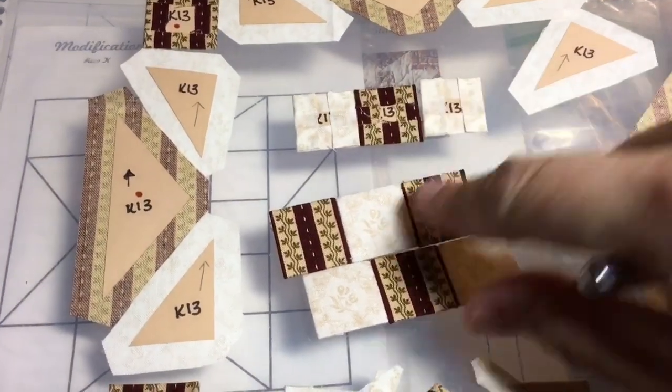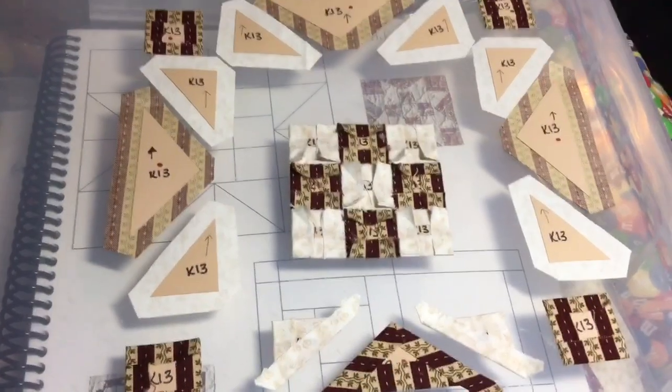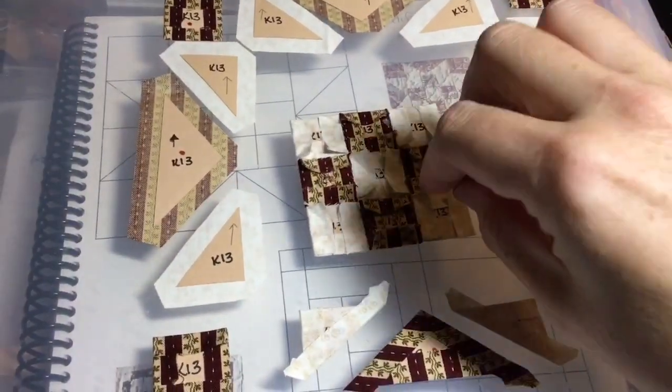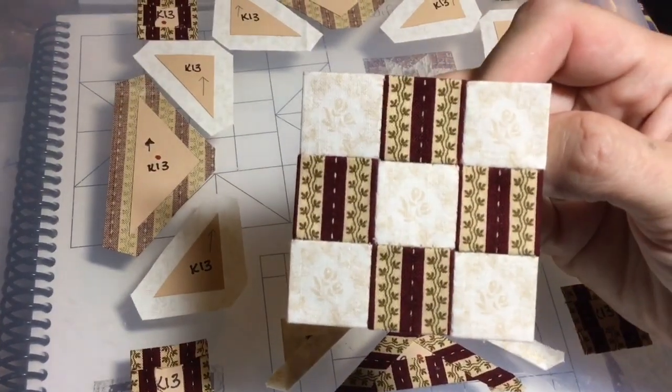This is taped, and then I'll attach this, and I'll make this into one big square. So I've got all three of my rows for my center block assembled, and all of my fabric is going in the correct direction.